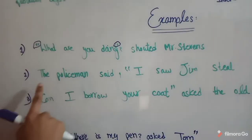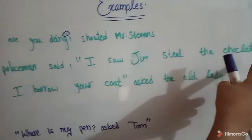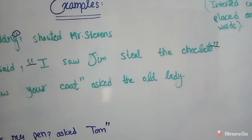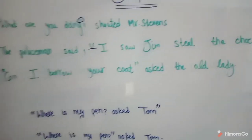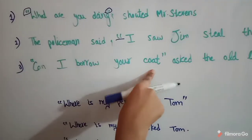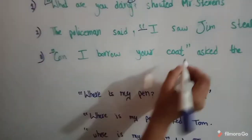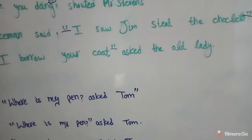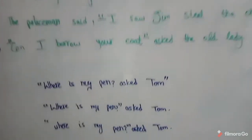The second example: The policeman said, "I saw Jim steal the chocolate." These are the inverted commas and these are the exact words of the policeman. Third example: "Can I borrow your coat?" asked the old lady. These are the inverted commas and these are the words of the old lady.